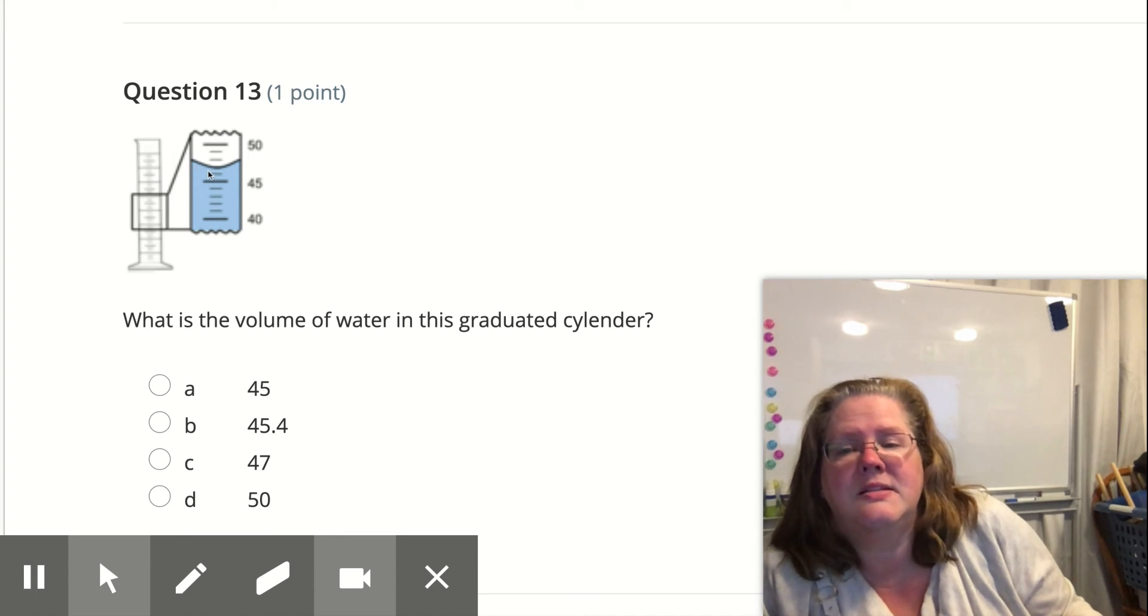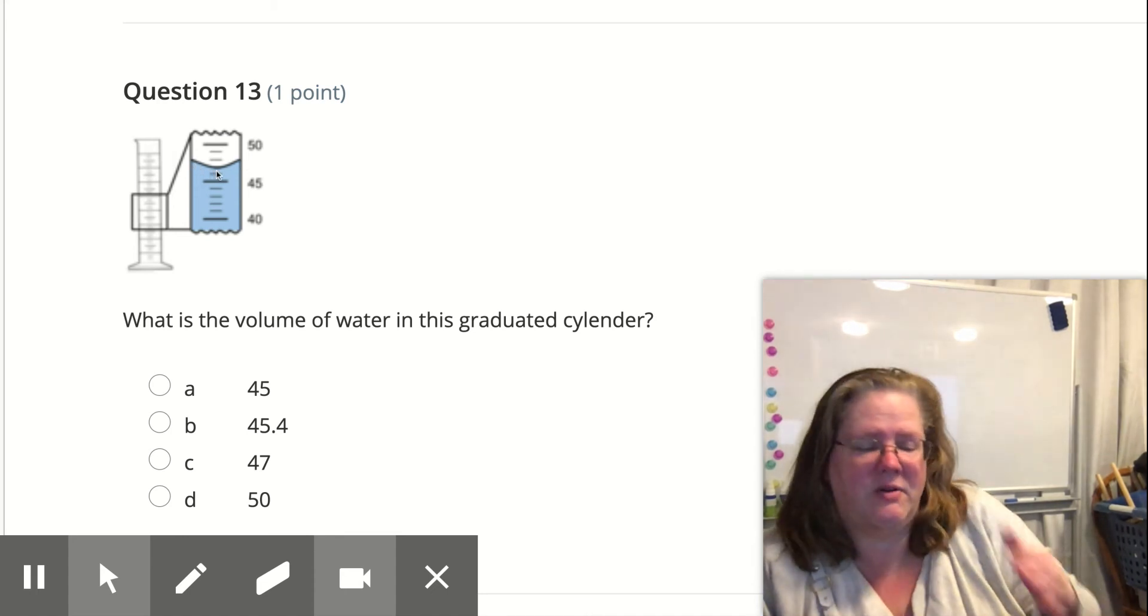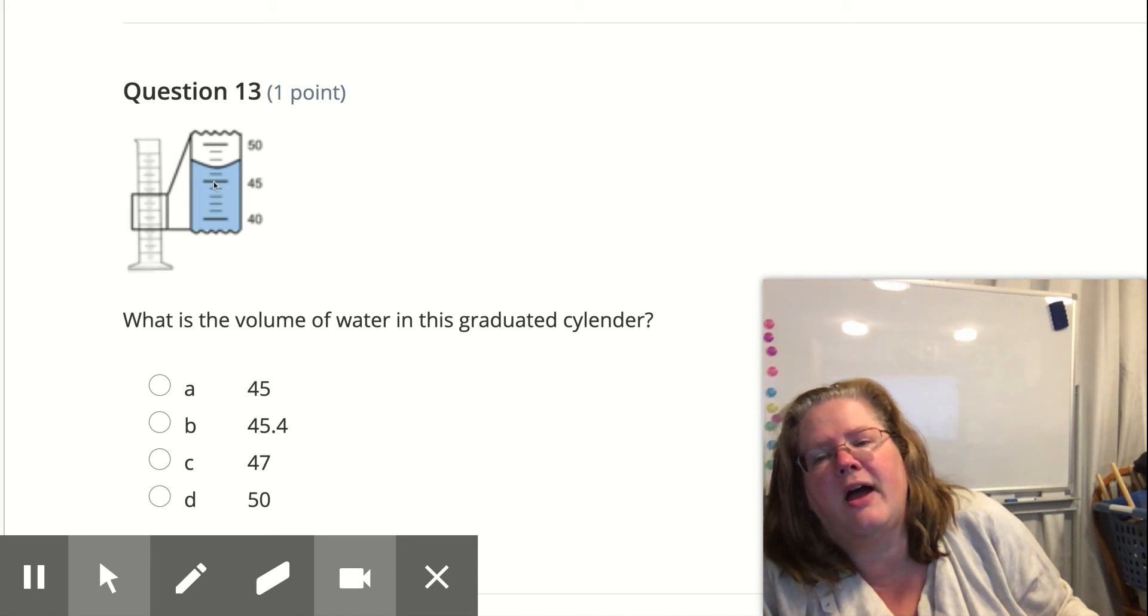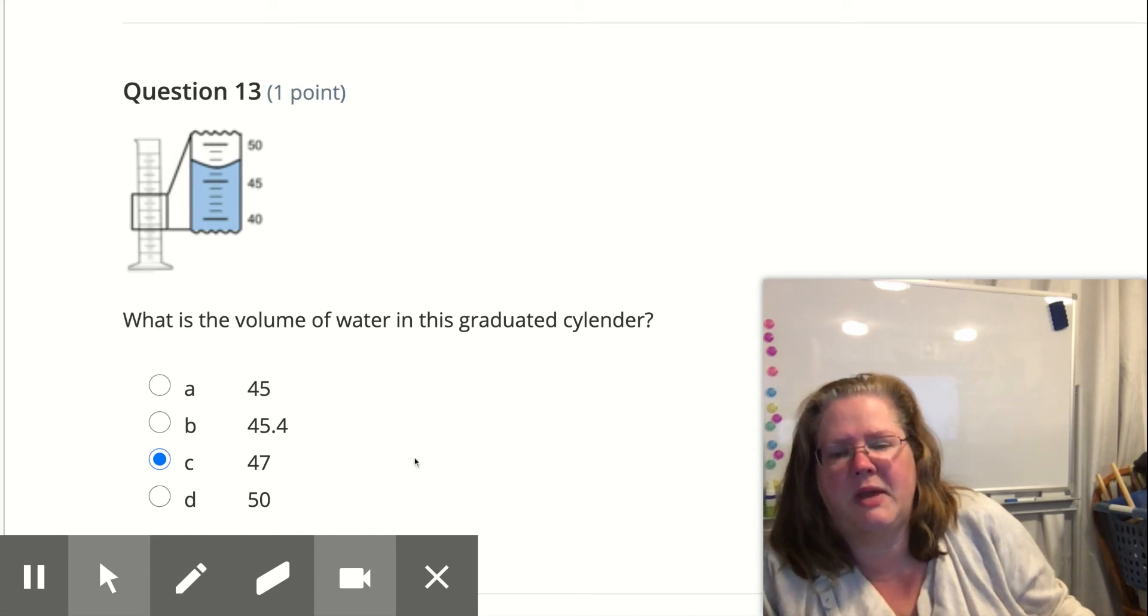So the meniscus is this curved part of the liquid and we read the bottom of that curve. And if we go, it's more than 45, it's more than 46, but it's right at 47. So 45, 46, 47. So 47 is my answer.